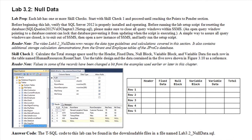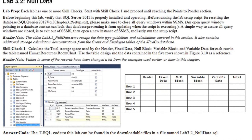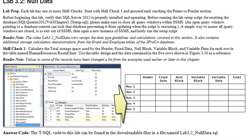Here is a zoom in of Lab 3.2 Skill Check 1. Based on the following table design and the following row population in the table, calculate the header, fixed data, null block, variable block, and variable length data payloads for rows one through five.